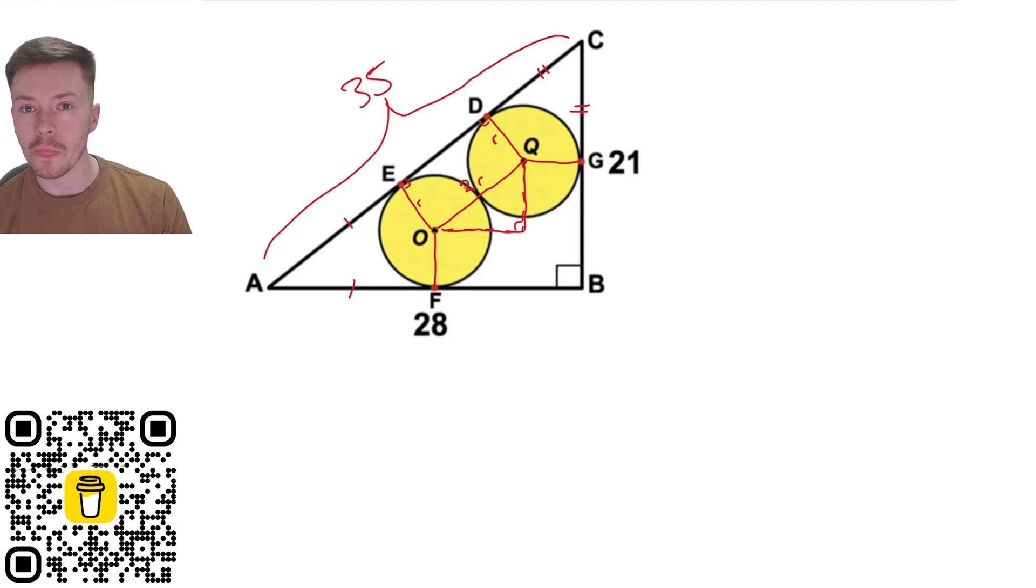Okay now because of the similar triangles I'm going to use that with my 2r to work out in terms of r the length of this side and this side. Now similar triangles I could try and work out well I could work out a scale factor from 35 to 2r that would basically be timesing it by 2r over 35, each of these sides so I could times 21 by 2r over 35, 28 by 2r over 35 and that would give me these side lengths.